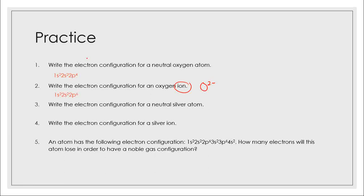What about the configuration for a neutral silver atom? It is 1s2, 2s2, 2p6, 3s2, 3p6, 4s2, 3d10, 4p6, 5s2, 4d9. Now for a silver ion — silver has a charge of plus one. Remember what we said about electron configurations: instead of losing from the 4d, it gets lost from the highest main energy level, which is the 5. So it becomes 1s2, 2s2, 2p6, 3s2, 3p6, 4s2, 3d10, 4p6, 5s1, 4d9.